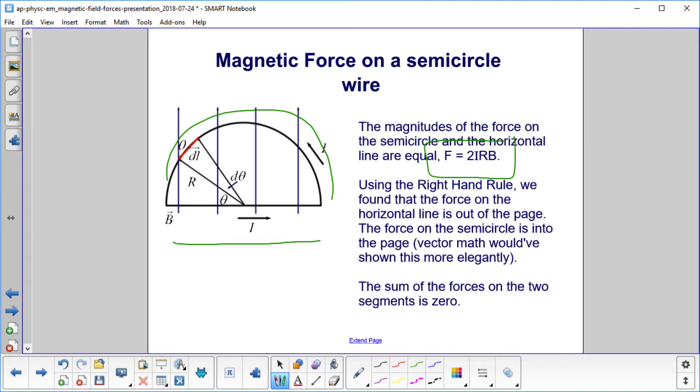Using the right-hand rule, we found out that the force on the horizontal line is out of the page. Force on the horizontal. And the force on the semicircle is into the page. Force, semicircle. So the sum of the forces on the two segments is zero.